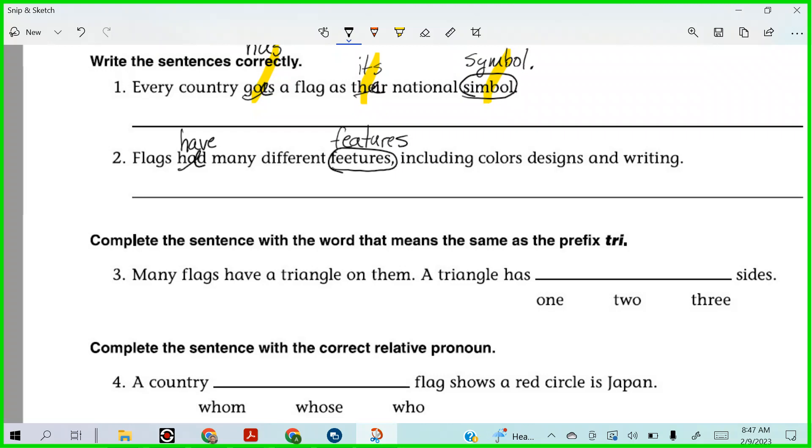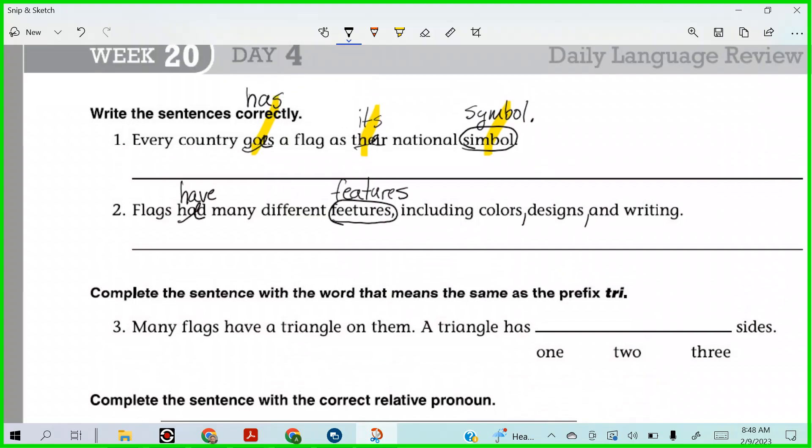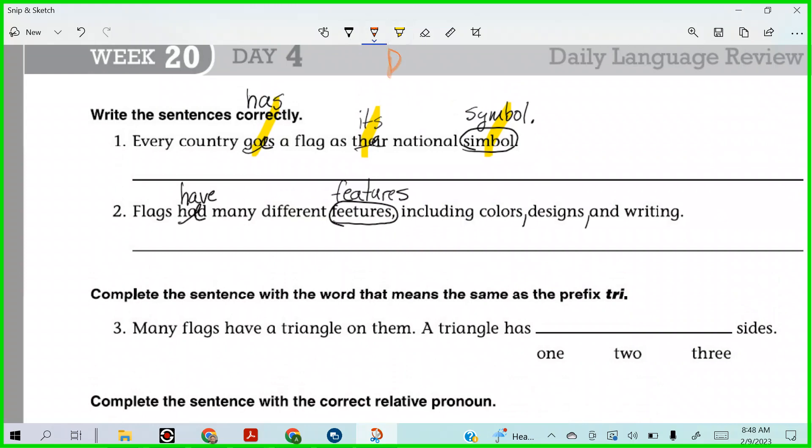Alright, so different features, comma, including colors, designs, and writing. We have to figure out where to place our commas on this one. Do you guys know how to do it? Gretchen? What is it now? After colors, colors, comma, designs, and writing. Yes. So now, what is our credo? We do what? We read, edit, and write.